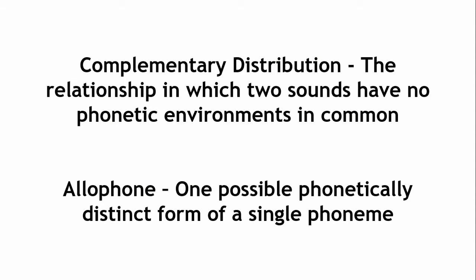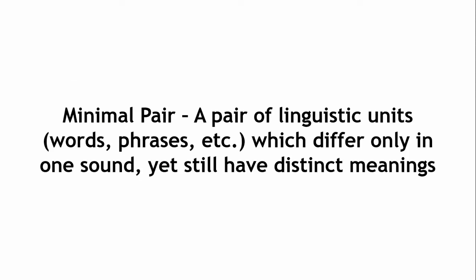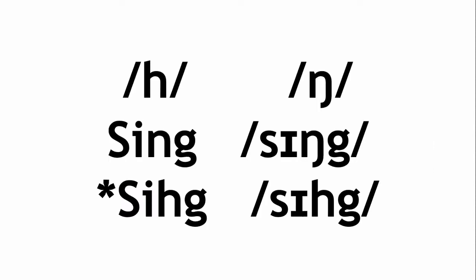Words like safe and save are called minimal pairs, and they are often used to determine whether or not two sounds are phonemes. It is worth noting, however, that not all phonemes will have a contrastive minimal pair with all other phonemes. For example, there are no minimal pairs in English containing a contrast between h and eng, because h never ends a syllable and eng always does.